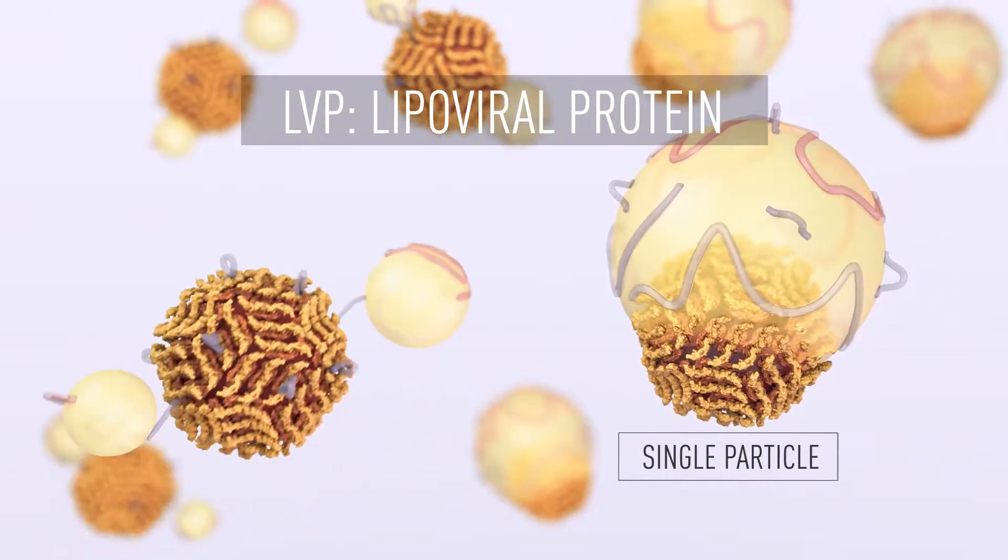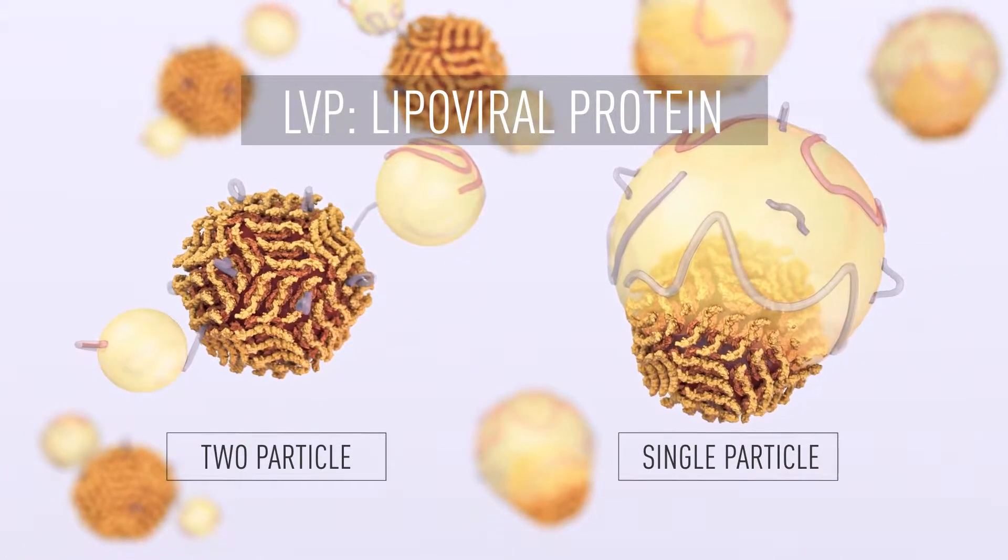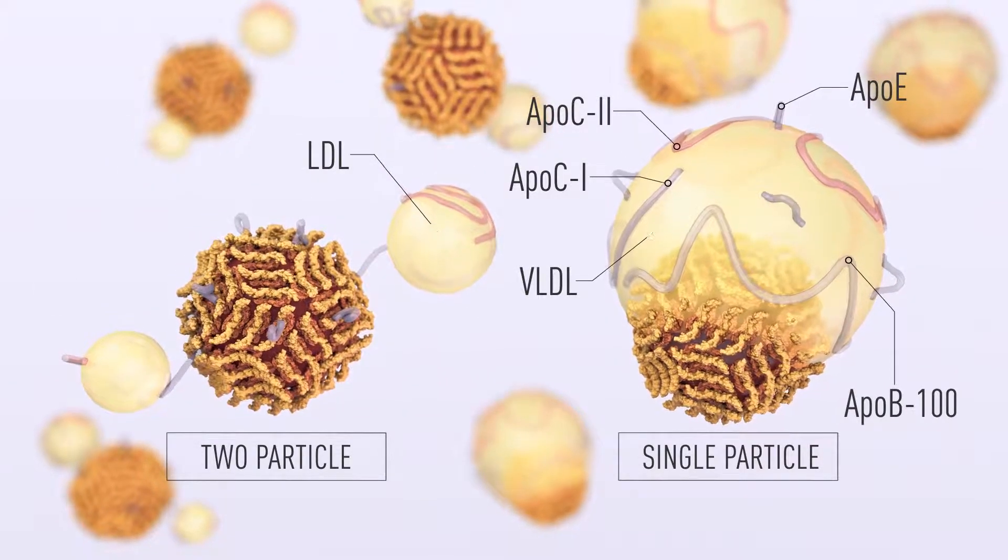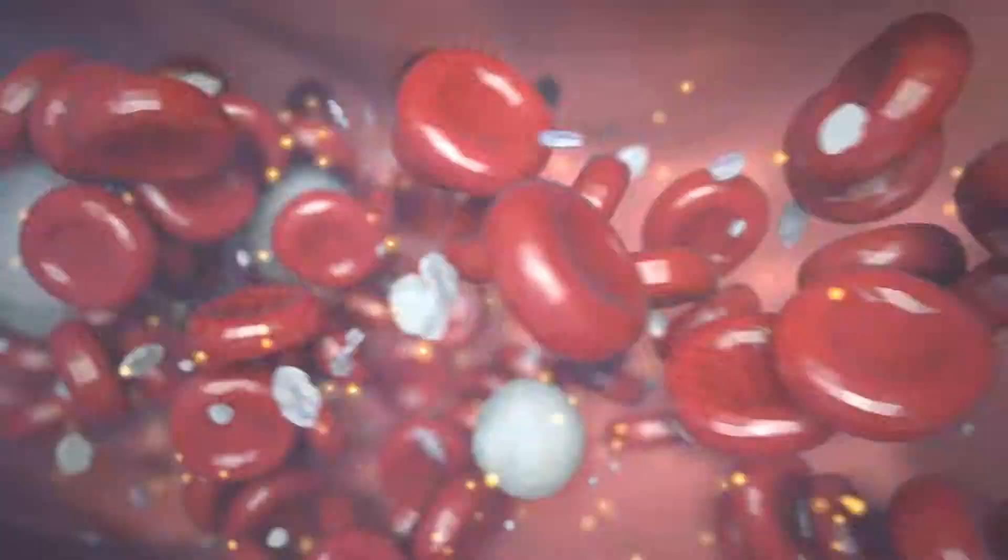The HCV life cycle begins with a virus and serum lipoproteins forming hybrid lipoviral particles. LVPs protect from antibody neutralization and facilitate entry.